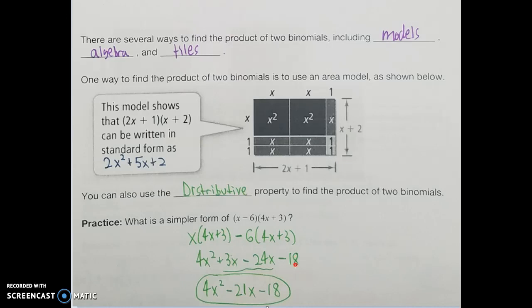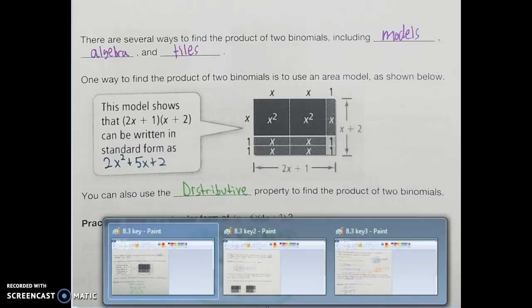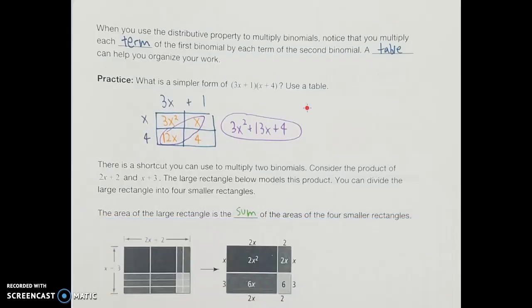One more step to write this in simpler form is to combine like terms. Since both terms have an x as a variable, 3x minus 24x should give us minus 21x. So altogether, that would be 4x squared minus 21x minus 18. We don't use that method as often, but it's another way we could approach it.